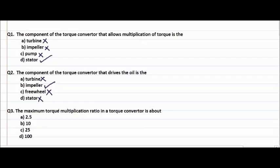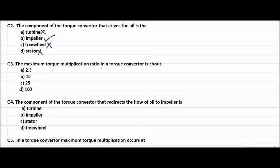Question number three, the maximum torque multiplication ratio in a torque converter is about - so remember the right answer is 2.5 times. 10, 25, or 100, these are not the answer. The torque multiplication ratio in a torque converter is about 2.5.